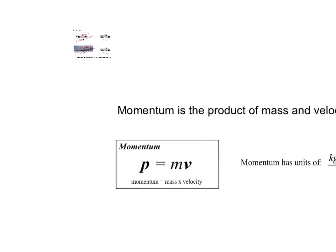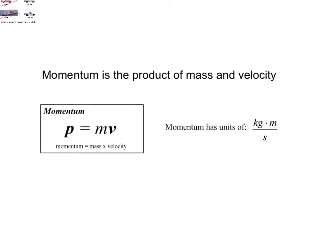In physics, momentum is defined as the product of mass and velocity. Momentum is represented by the symbol p, which I know, just like impulse, it totally makes sense to call momentum p, but it just is. So, our equation for momentum is mass times velocity.